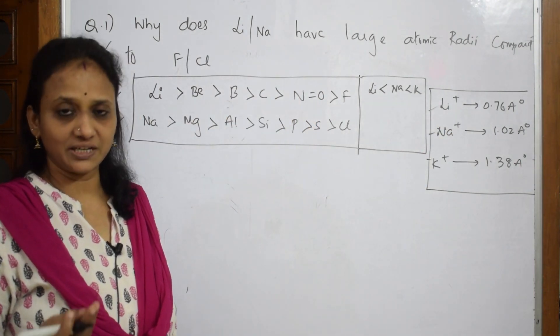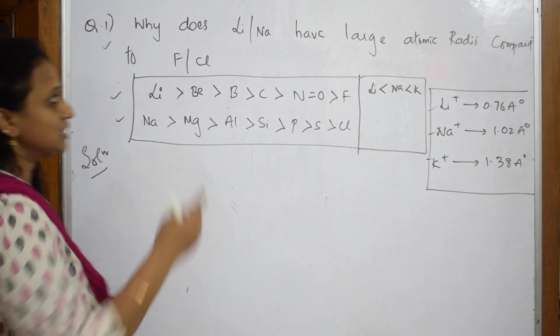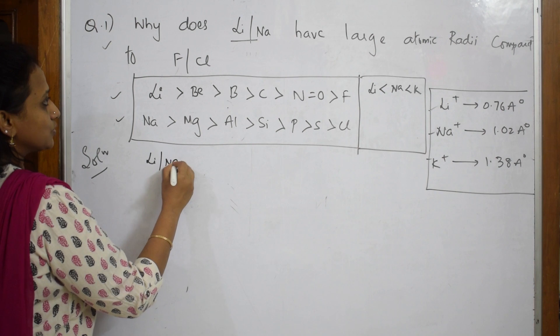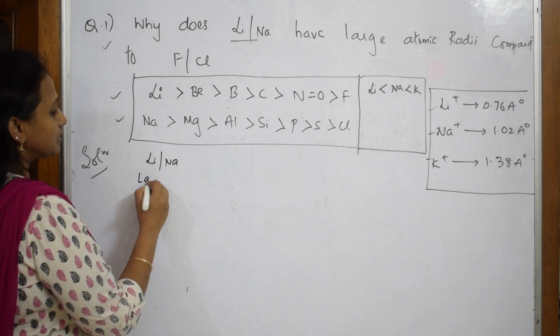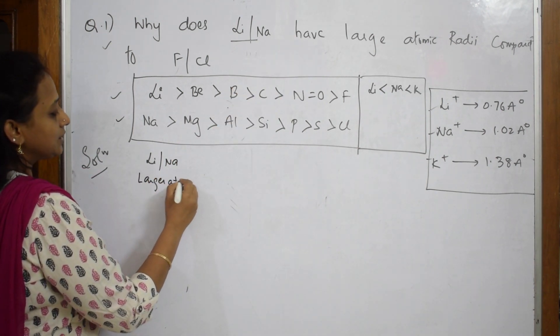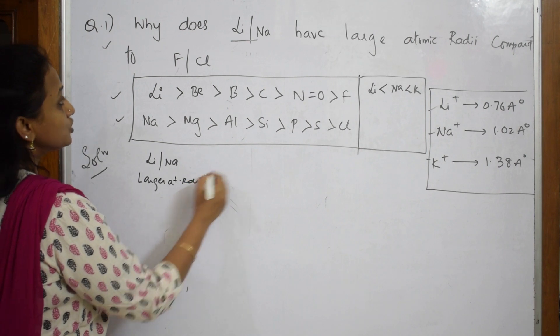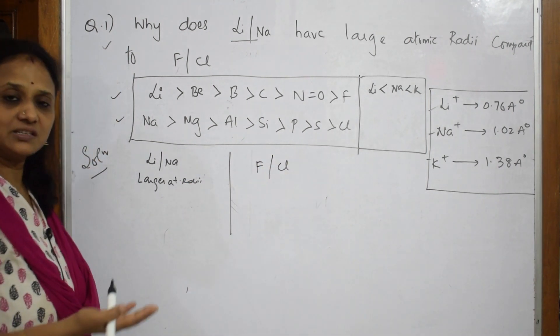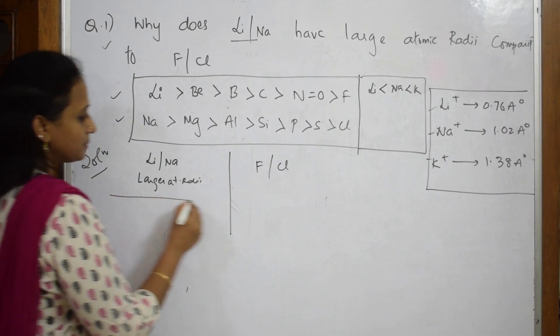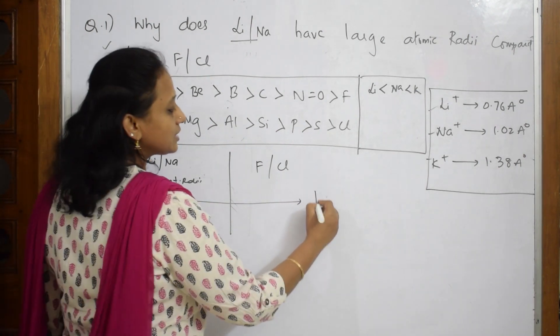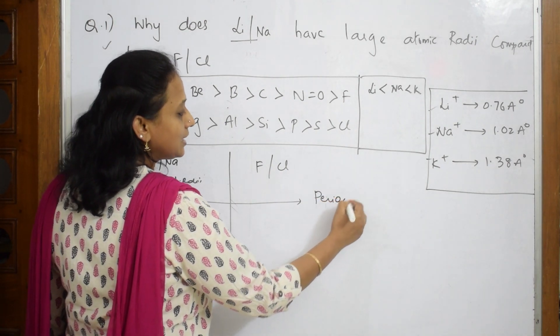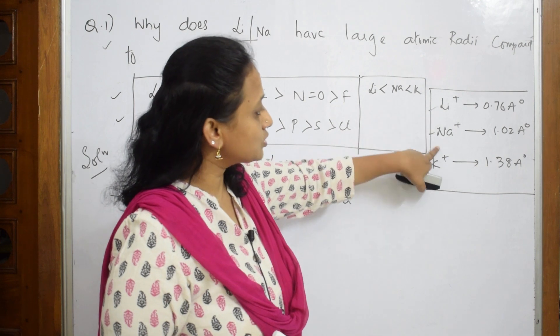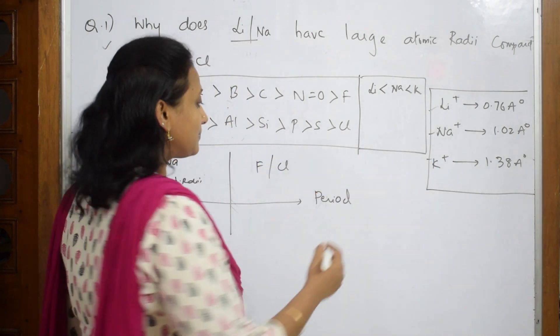But the way of answering should be the same. What did they ask us to compare? They said lithium and sodium have larger atomic radii compared to fluorine and chlorine. When you see these elements, we are going from left to right in the periodic table, that is in the period. And there is one more data information given here - lithium, sodium, potassium.